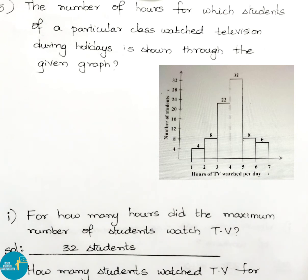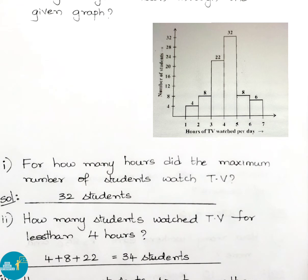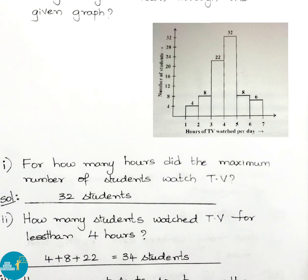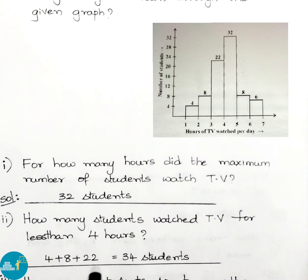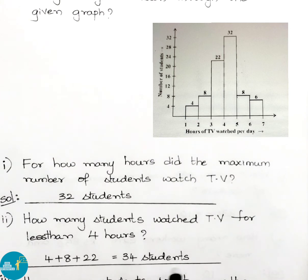Question 2: how many students watched TV for less than 4 hours? Observing the bar graph, the first three bars give values of 4, 8, and 22 students respectively. The total is 34 students. Therefore 34 students watched TV for less than 4 hours.